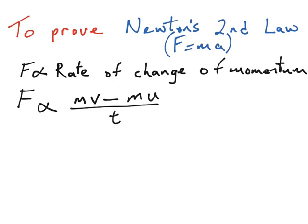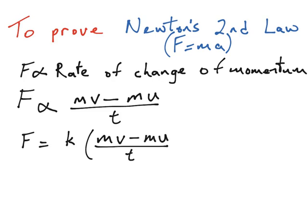Our next step is to get rid of that proportional sign and turn it into an equal sign. To do that, we multiply the right-hand side by a constant — we'll use the letter k. So we have that the force is equal to the constant k multiplied by everything in our fraction: mv minus mu, which is the change in momentum, all divided by the time.